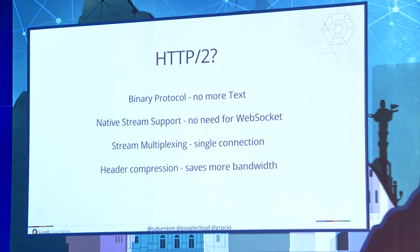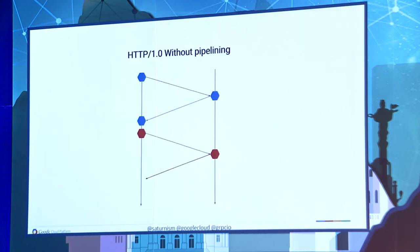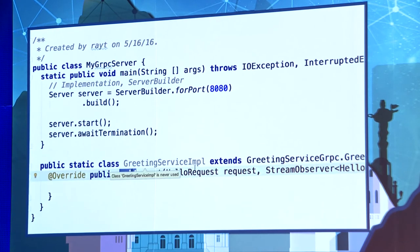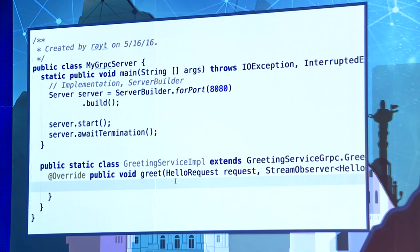HTTP 2 supports server-side streaming to the client — you don't need WebSocket, you can just use HTTP 2. You can stream from client to server for IoT devices, or do bidirectional streaming. In gRPC, the generated stubs are non-blocking by default. This is an asynchronous call by default — it is up to the client to decide whether the client needs to block or not.